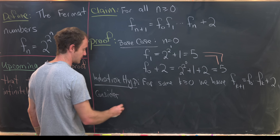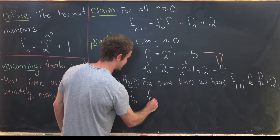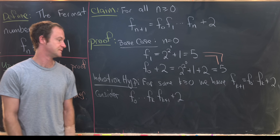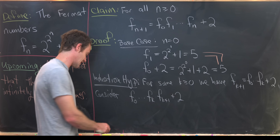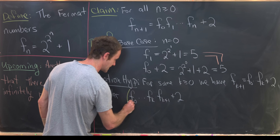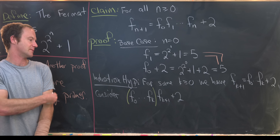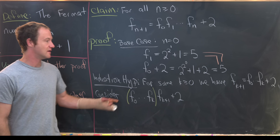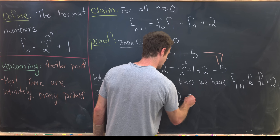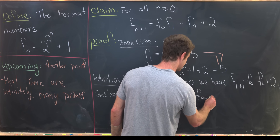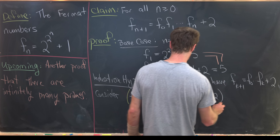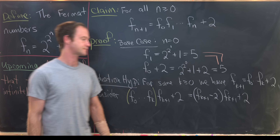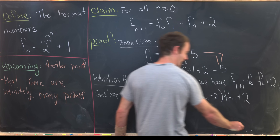Let's consider the product F sub 0 all the way up to F sub k, times F sub k plus 1, plus 2. Applying the induction hypothesis to that portion, and rewriting slightly, we see we have F sub k plus 1, minus 2, times F sub k plus 1, plus 2.